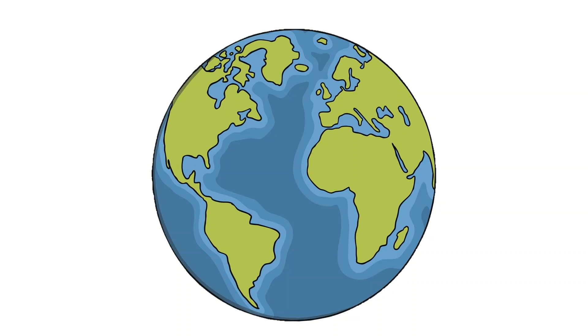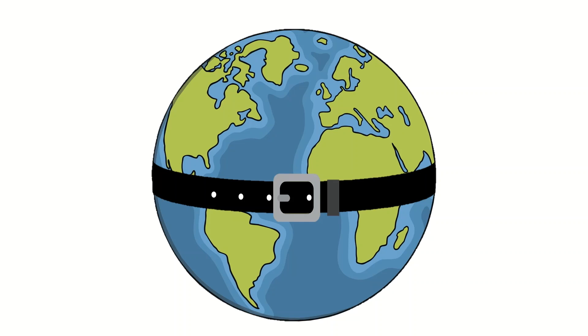Imagine this is our planet and we put a belt around it and we fasten the belt really tight so there is no gap between the surface of Earth and the belt. Now we add one meter to the length of the belt.